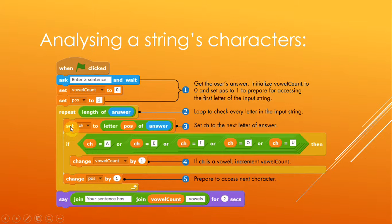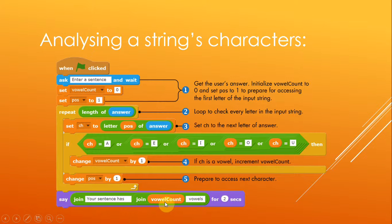It goes and repeats the loop again — sets char to letter two of answer, which equals N. Is N a vowel? No. It steps out of the if block and keeps going, repeating that number of times. When finished it's going to say 'join: your sentence has 10 vowels' — joining the count to the word 'vowels'. This is basically how you can quickly analyze a sentence to count vowels, numbers, spaces, punctuation marks, or how many letters are in your sentence using those string functions.